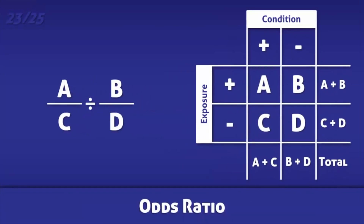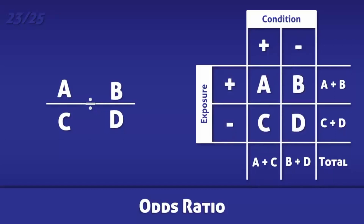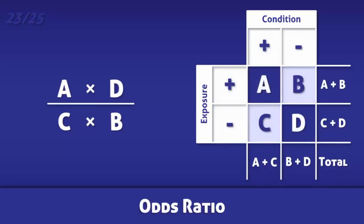The odds ratio is the odds that a person with an illness or disease was exposed to a risk factor in comparison to a person without it. It is calculated by dividing the odds of exposure in cases by the odds of exposure in controls. Alternatively, you may calculate the odds ratio by dividing the product of A times D by the product of C times B.